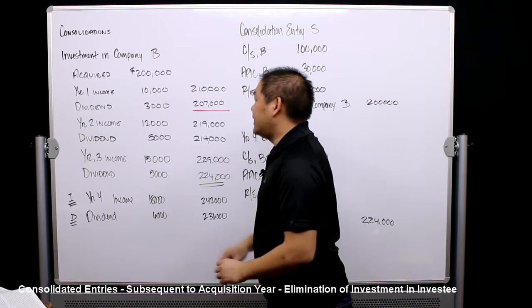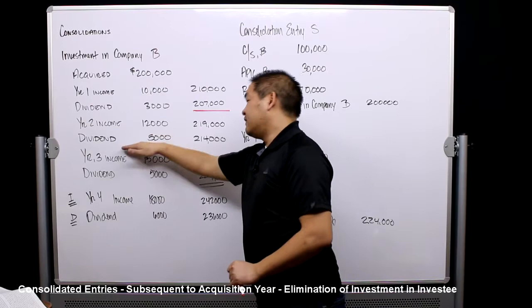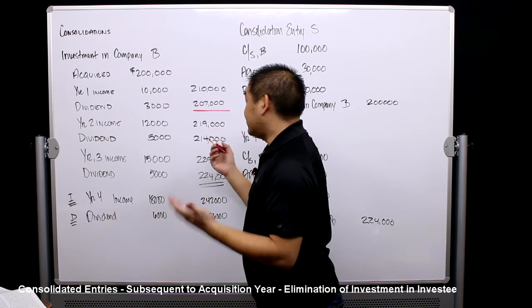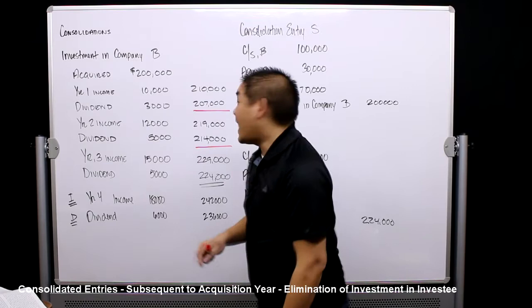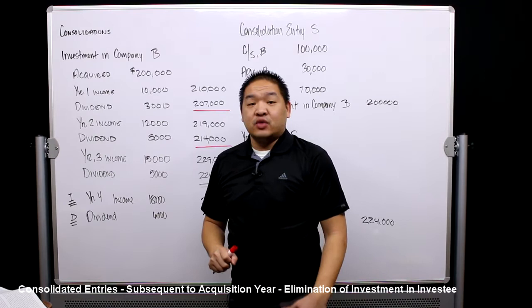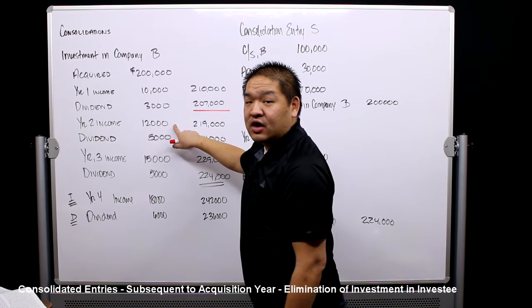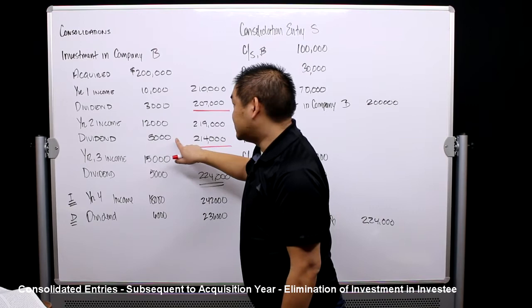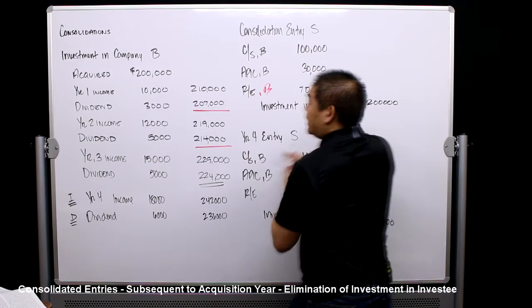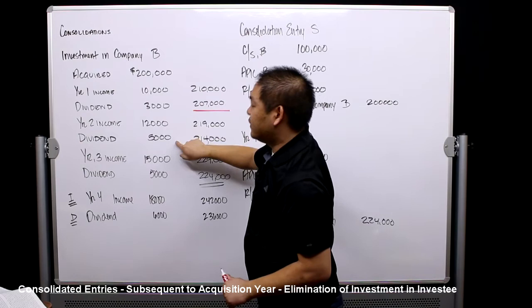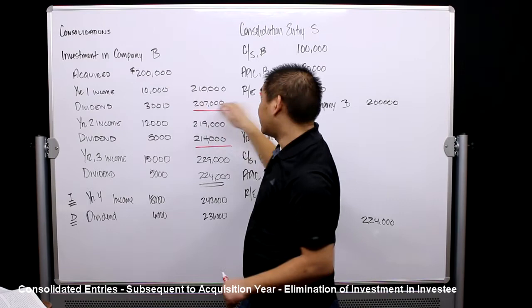Now assume year two: $12,000 of income bumps the account to $219,000, and dividends bring it to $214,000. When we do consolidation entry I in year two, we only remove the current year's $12,000 — not the prior year's $10,000. Entry D removes the current dividends, but the prior year amounts remain uneliminated. We still have a growing difference that hasn't been removed.